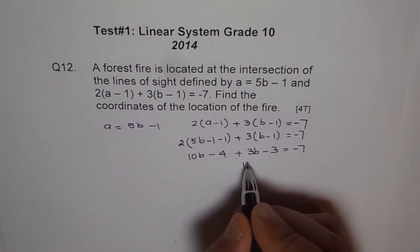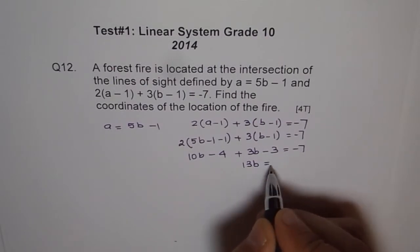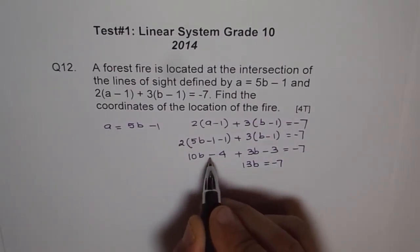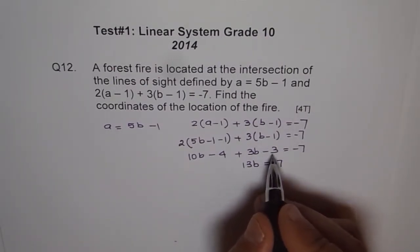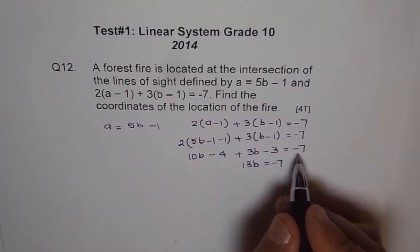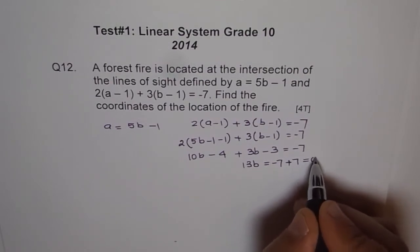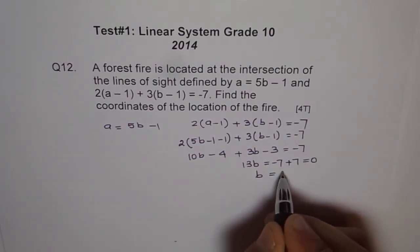We will write 13B equals minus 7 and this is minus 4 minus 3 is also minus 7. When it goes that side, it becomes plus 7. That gives me a 0. So B is equal to 0.